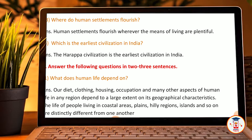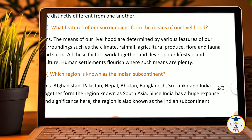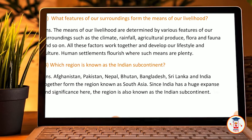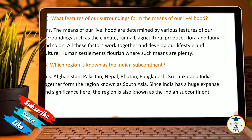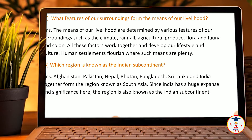The life of people living in the coastal areas, plains, hilly regions, islands and so on are distinctly different from one another. What features of our surroundings form the means of our livelihood? The means of our livelihood are determined by various features of our surroundings such as climate, rainfall, agriculture, flora and fauna and so on. All these factors work together and develop our lifestyle and culture. Human settlements flourish where such means are plenty.